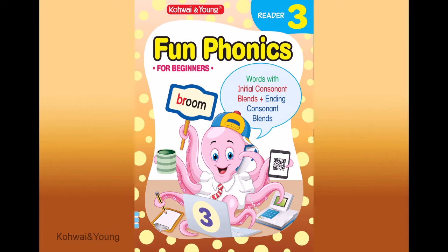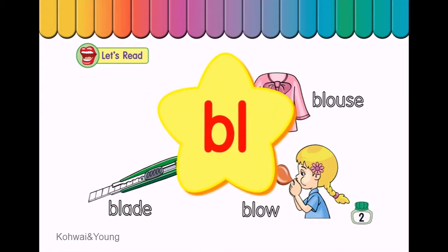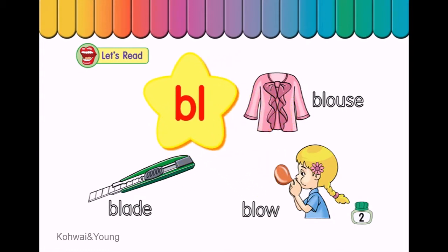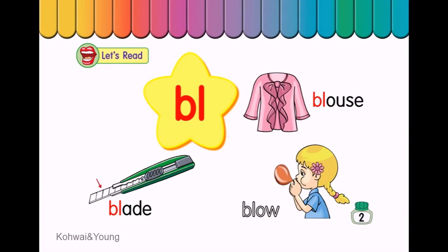Words with Initial Consonant Blends and Ending Consonant Blends. Let's read. Bl — Blade. Blouse. Blow.